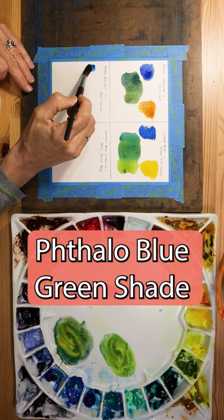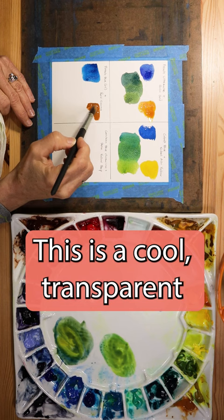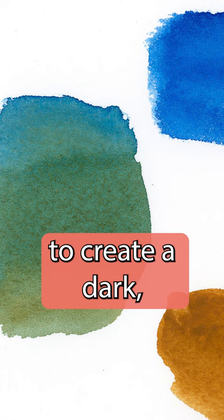Phthalo blue green shade and raw sienna. This is a cool transparent blue combined with a warm earth tone yellow to create a dark neutralized green.